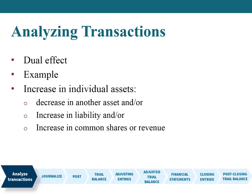Analyzing transactions. Whether using the basic accounting equation or the expanded accounting equation, remember that the accounting equation must always be in balance. As a result, a recorded transaction will have, at minimum, a dual effect on the equation. For example, if an individual asset is increased, there must be either a corresponding decrease in another asset, and/or an increase in a specific liability, and/or an increase in common shares or revenues, either of which would result in an increase in shareholders' equity.